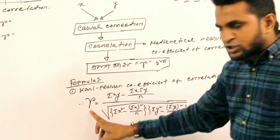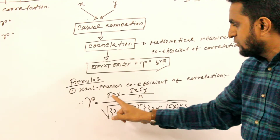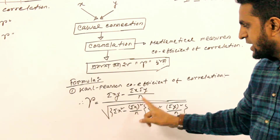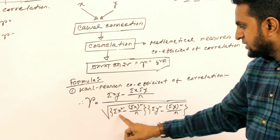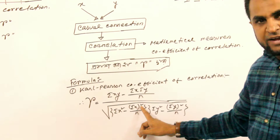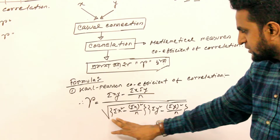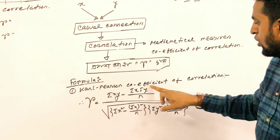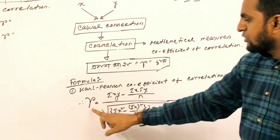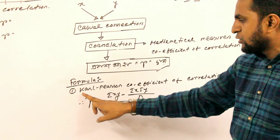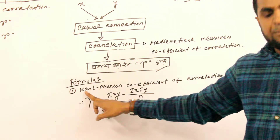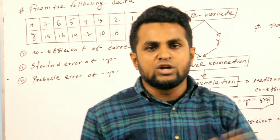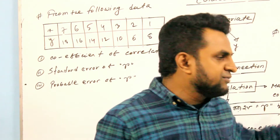What is the coefficient of correlation? The formula: summation of XY minus summation of X times summation of Y divided by N, root over summation of X squared minus summation of X whole square divided by N — that is the X part — and the Y part. That is the Carl Pearson coefficient of correlation.